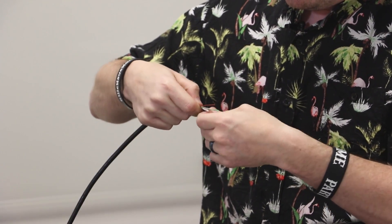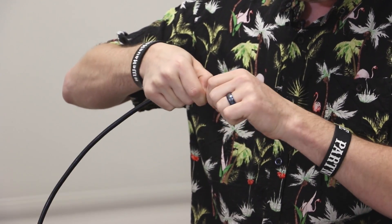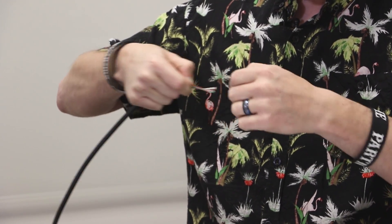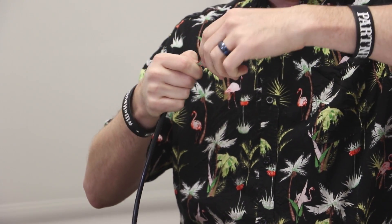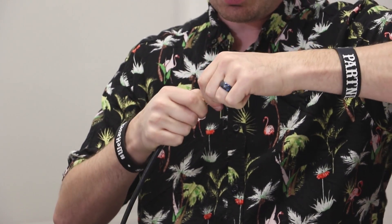Once you get all of that lined up together, you can pull on that some more, kind of straighten them out. Get them where they're sitting next to each other where they're not wanting to cross on each other.